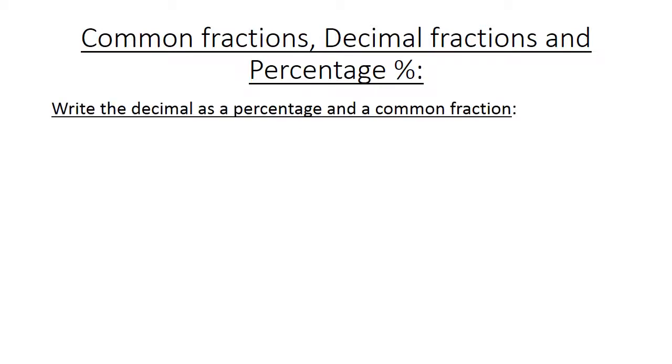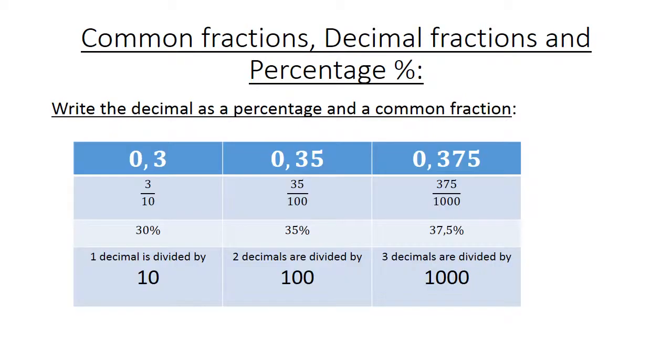Common fractions, decimal fractions and percentage. Write the decimal as a percentage and a common fraction. Our first decimal, 0,3. If you write it as a common fraction, it's 3 over 10. But where do we get 10? After the comma, there's only one place. So 1 decimal is divided by 10. 3 over 10 times 100 equals 30%.